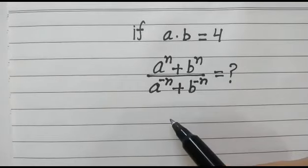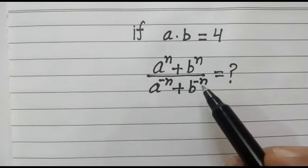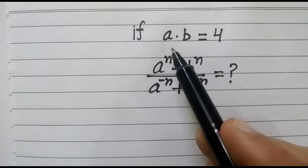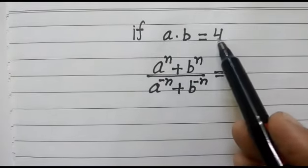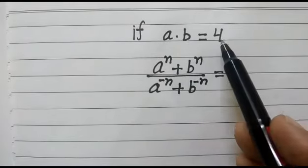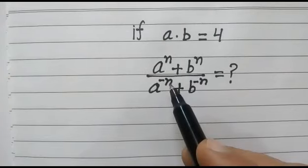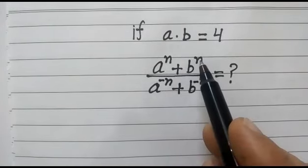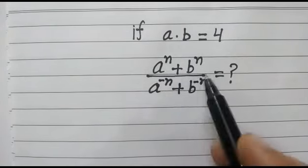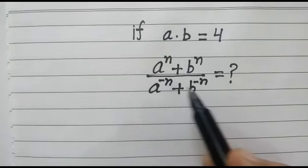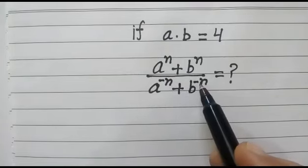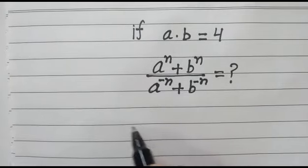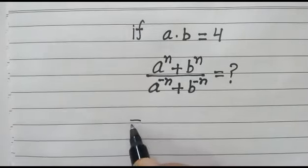Hi friends, today we have a problem. In this problem we have given that a into b is equal to 4. We have to find out the value of a to the power n plus b to the power n, over a to the power minus n plus b to the power minus n, is equal to 1. Let us start.